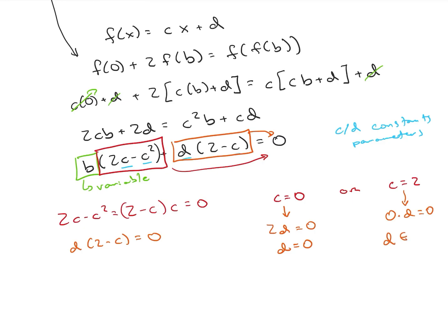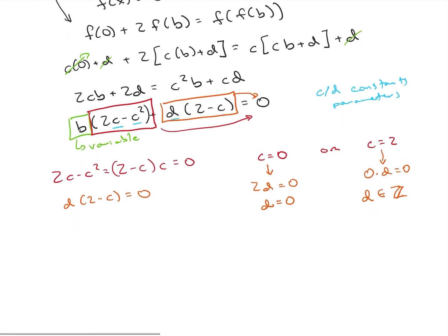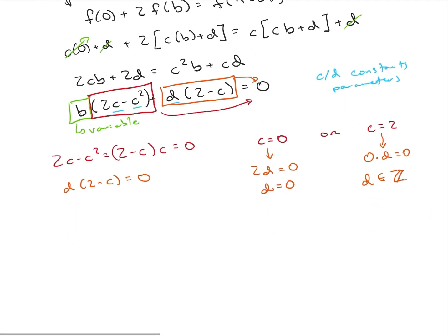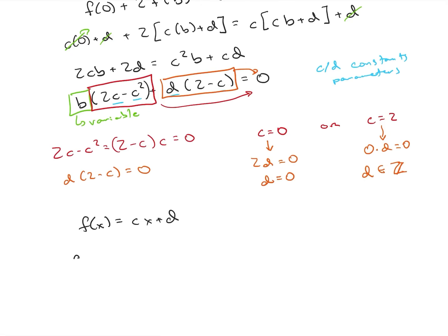And remember that we have to output an integer so d will have to be an integer as well. So we've actually developed our full set of solutions now. What we've determined was that f of x had to be of the form cx plus d. So our two solutions are f of x equals 0, and f of x equals 2x plus d with d an element of the integers.